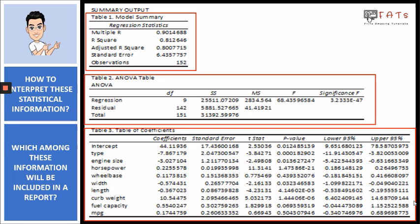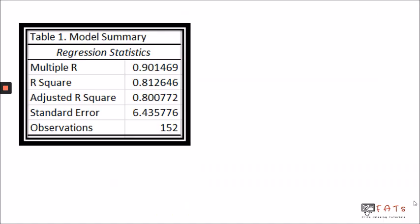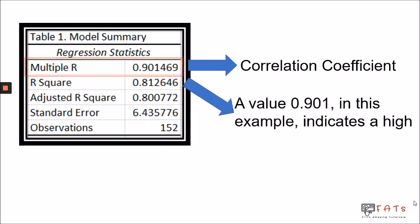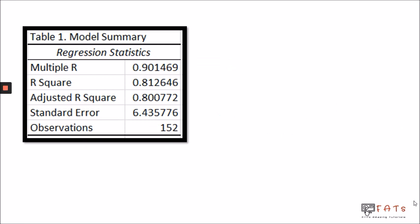Let's get right through it. Table 1 is the Model Summary. We have Multiple R, which is also called the correlation coefficient, which tells us the level of prediction of the independent variables to our dependent variable. In this example, a value of 0.901 indicates a high level of prediction.